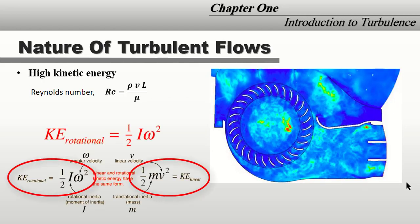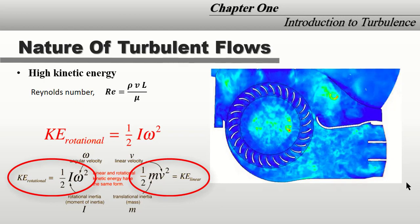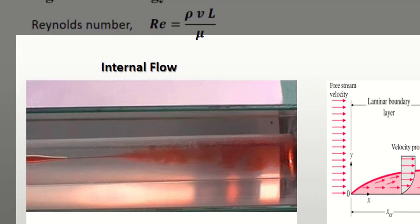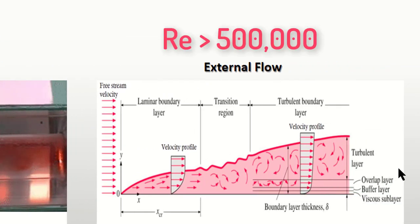So as Reynolds number is high, the inertia and kinetic energy are high. Reynolds number in internal flow, which is in pipes, must be greater than four thousand, and in flow over flat plate must be greater than five hundred thousand.